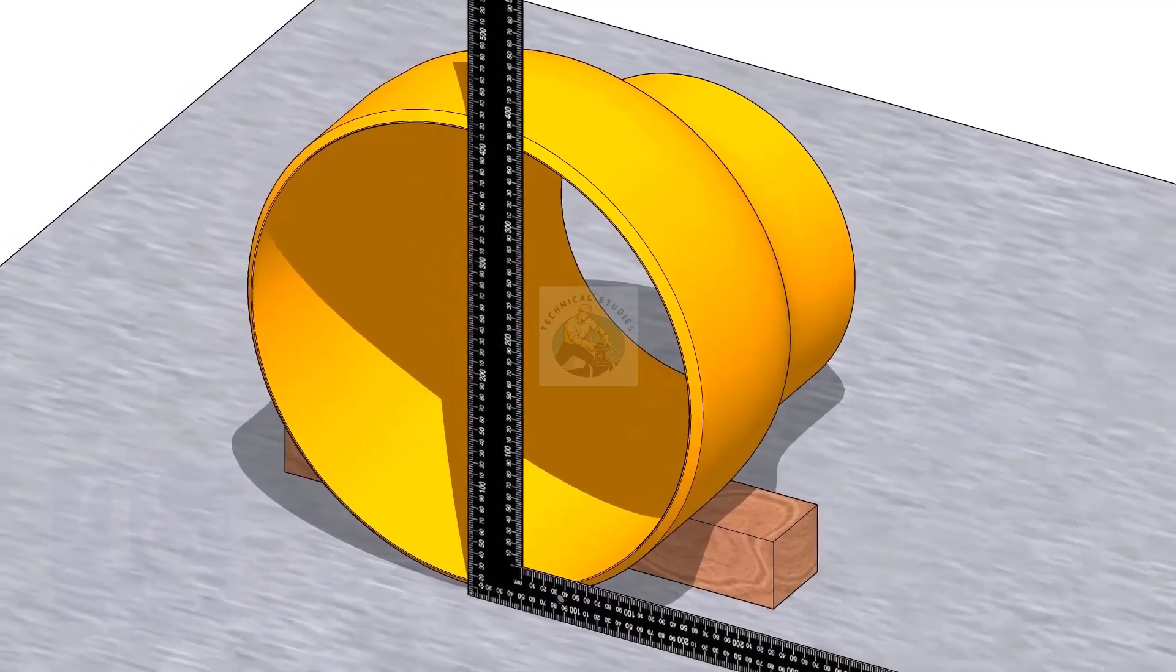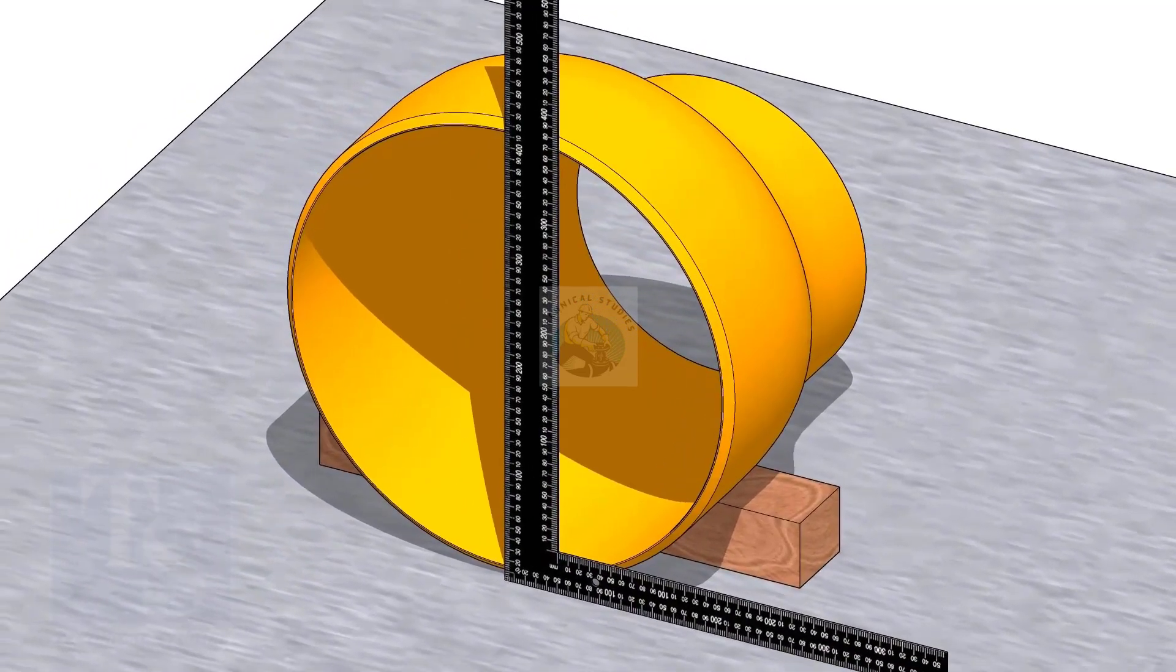Hold a right angle at the center of the large face of the reducer. Move the right angle until it is exactly at the center.